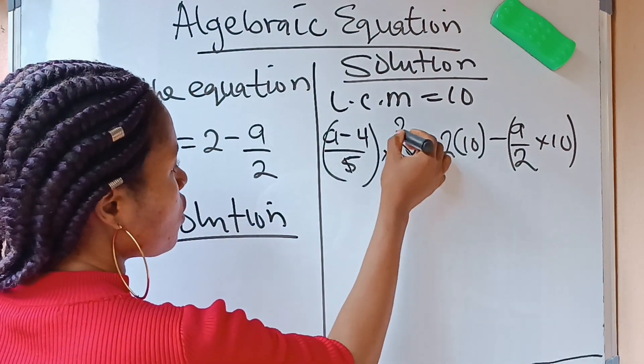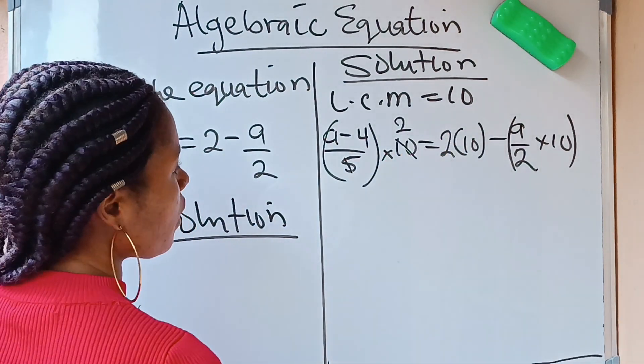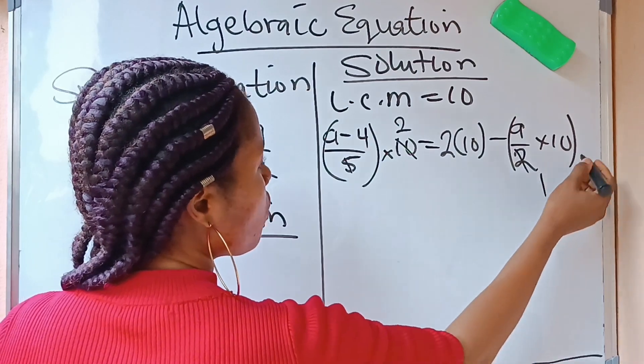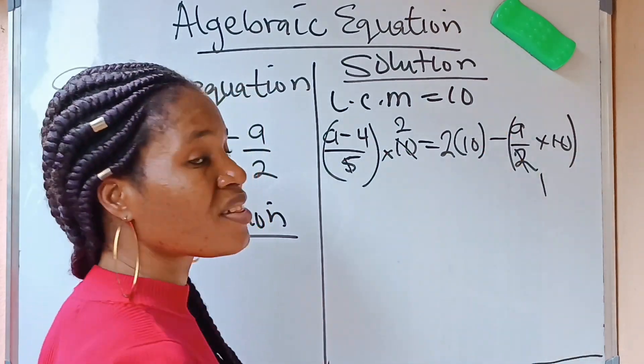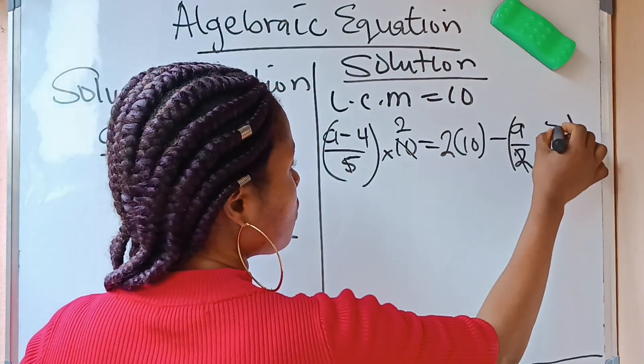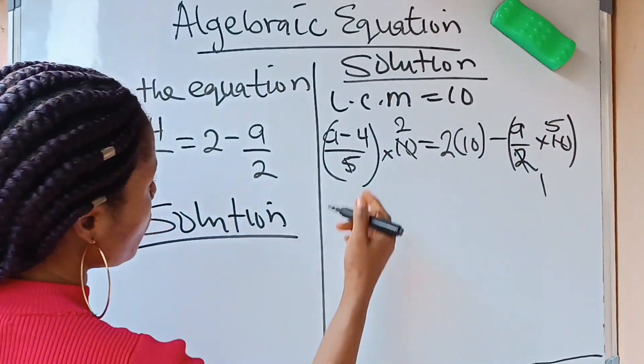5, we cancel 10 to give you 2. Then, you have 2, we cancel itself 1. Cancel 10 or divide 10 to give you 5. Now, what do we have here?